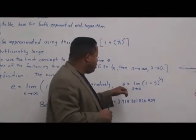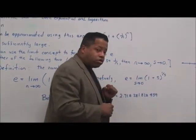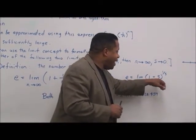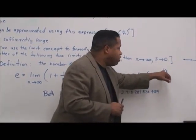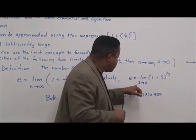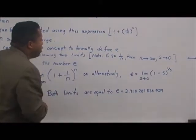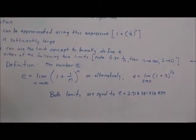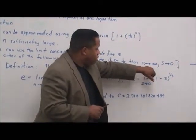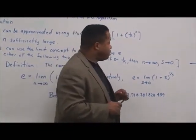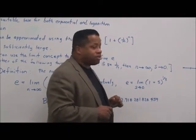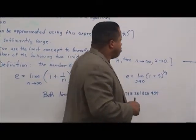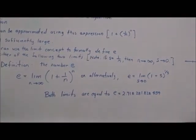Alternatively, e is also equal to the limit of (1 + s)^(1/s) as s approaches 0. Note that if s equals 1 over n, then as n approaches positive infinity, s approaches 0 — so both expressions are equivalent.